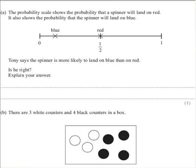Okay, now we're on question 9. The probability scale shows the probability that a spinner will land on red. It also shows the probability that the spinner will land on blue. Tony says the spinner is more likely to land on blue than on red. Is he right?